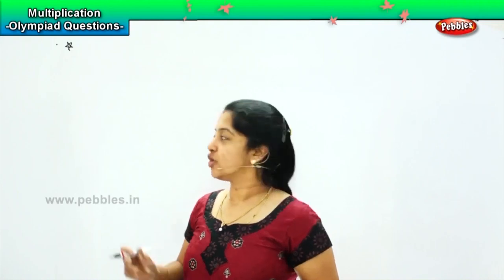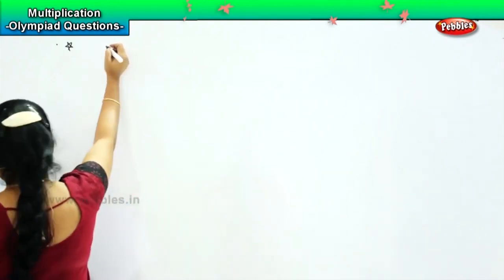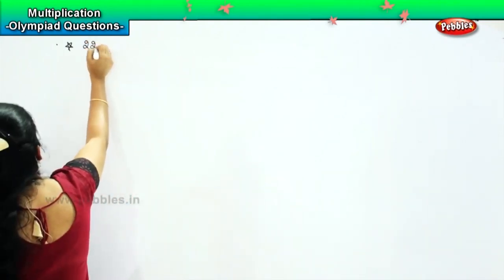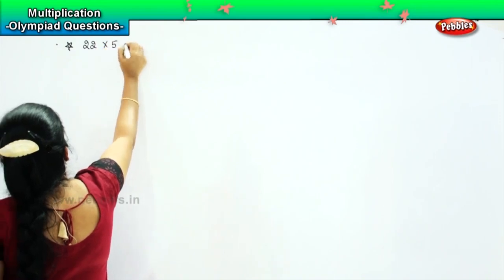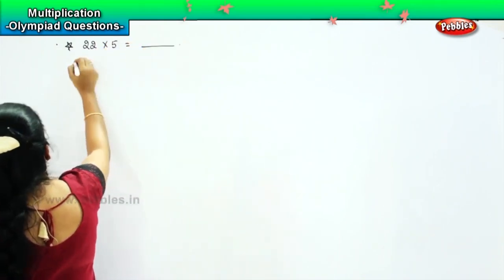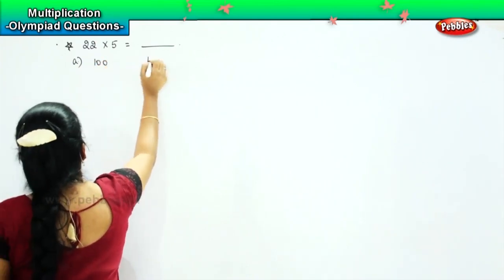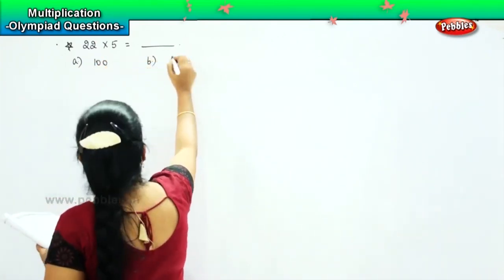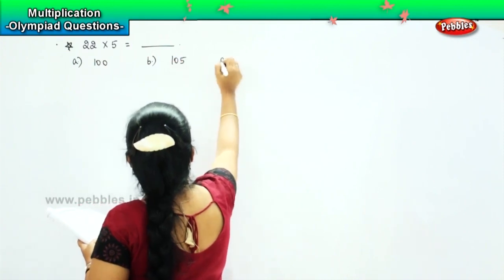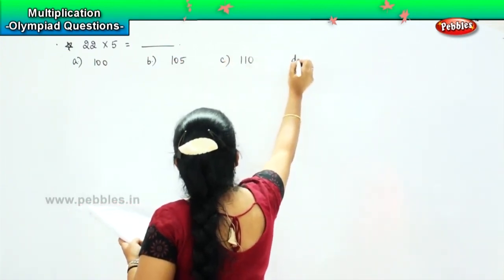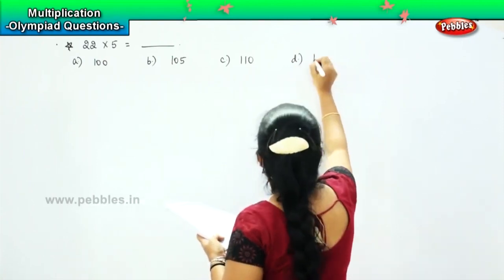Shall we solve our next levels children? Here is your next question. The question says 22 into 5 is equal to dash and your options are 100, option B 105, option C 110, option D 115.